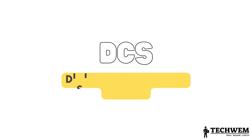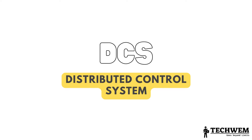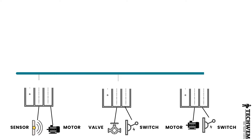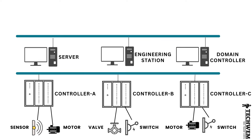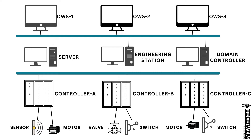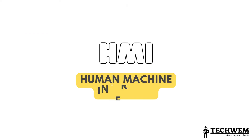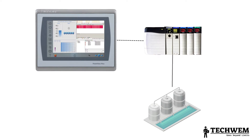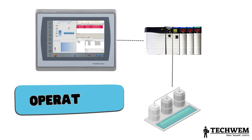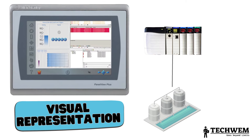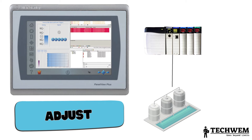Number 4: DCS, Distributed Control System — a centralized system that manages and controls multiple processes or machines across a distributed network, providing supervisory control and real-time monitoring capabilities. Number 5: HMI, Human Machine Interface — a graphical interface that allows operators to interact with and control industrial systems, providing a visual representation of the process and enabling users to monitor and adjust parameters.